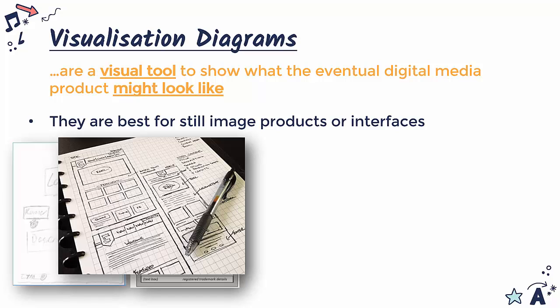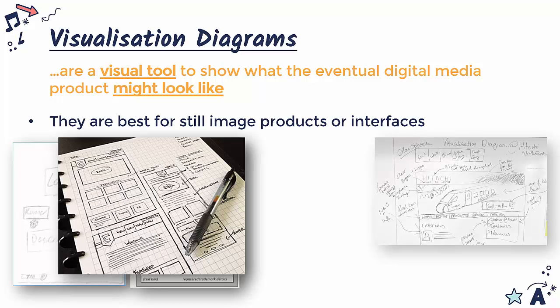This example here is just done on paper for a website — again, another interface sketched out, not lots of detail, but it's a way of visualizing how it might look. This example here is a nicely annotated version of what looks like a website, and we've also got a bit of detail about the color scheme, shown here quite informally.